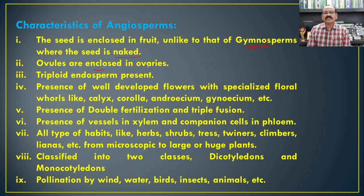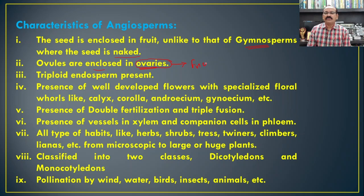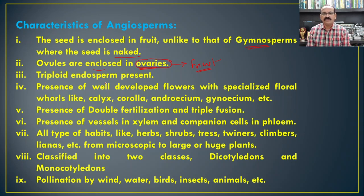The ovules are enclosed in the ovary, and because of that there is formation of the closed seed in angiosperms. When we see the ovary, after maturity it converts into the fruit. This is the reason why gymnosperms are not responsible for the formation of fruit, because ovary-like structures are completely absent in gymnosperms. Triploid endosperm is a characteristic feature of angiosperms because in angiosperms there is double fertilization, and because of double fertilization there is formation of triploid endosperm.